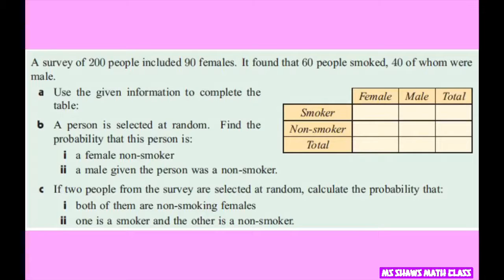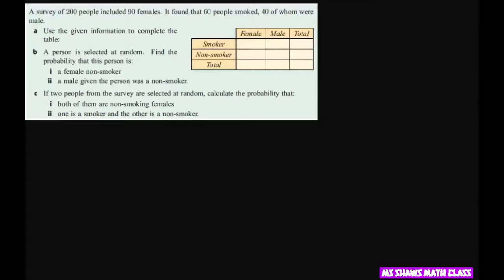So we got to use the table to fill out the information and then calculate some probabilities. So let's do that first. So we have a total survey of 200.